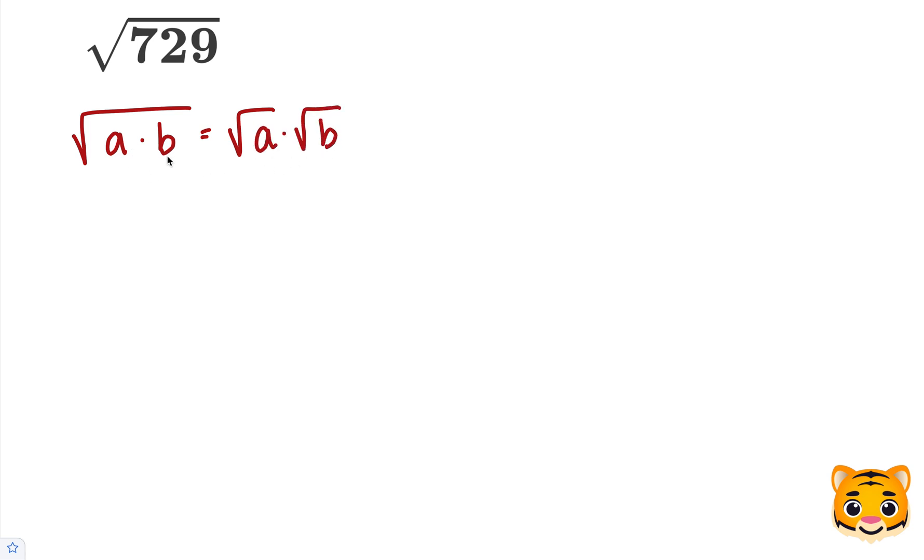So if we have two numbers inside a square root multiplied by each other, we can rewrite it as two separate square roots multiplied together.